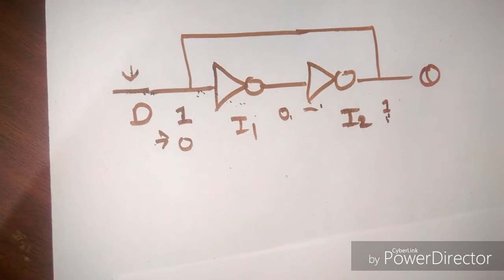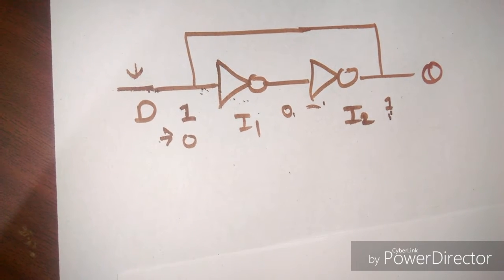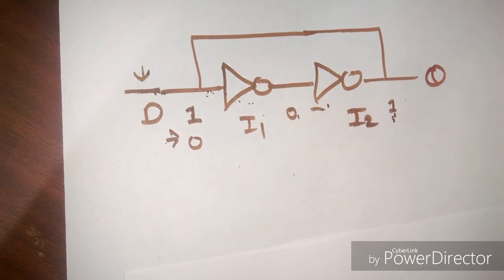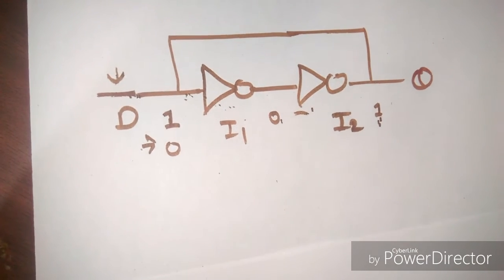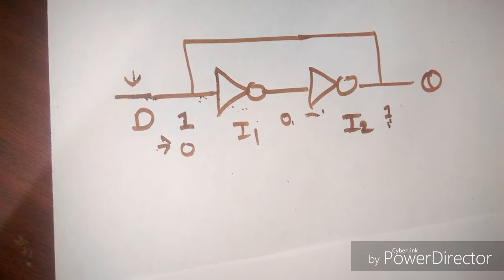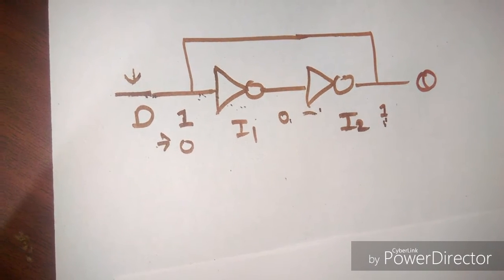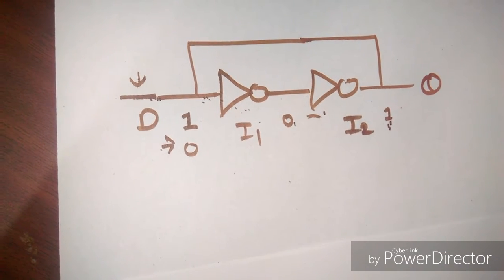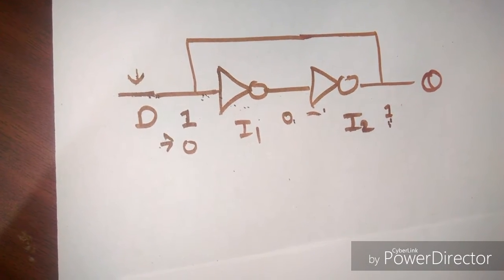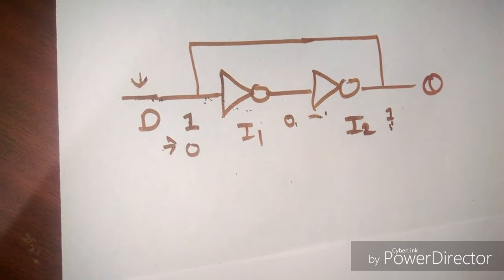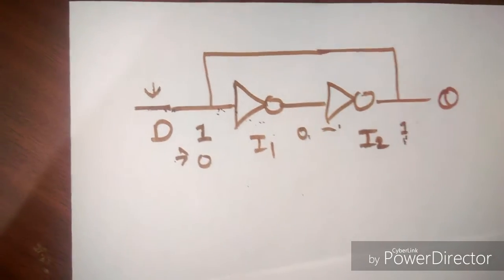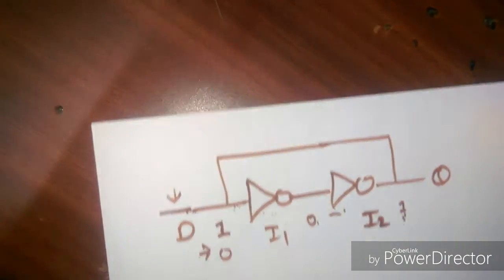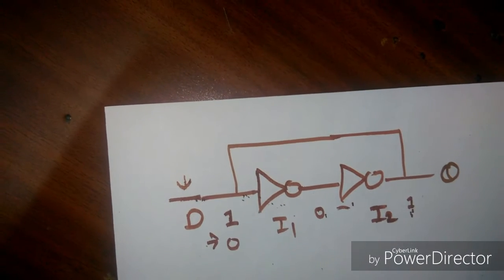D flip-flop is a simple memory element that is used to store bits. I am not going to make this circuit with AND and NAND gates. I am simply using two inverters. So let's see how it works.